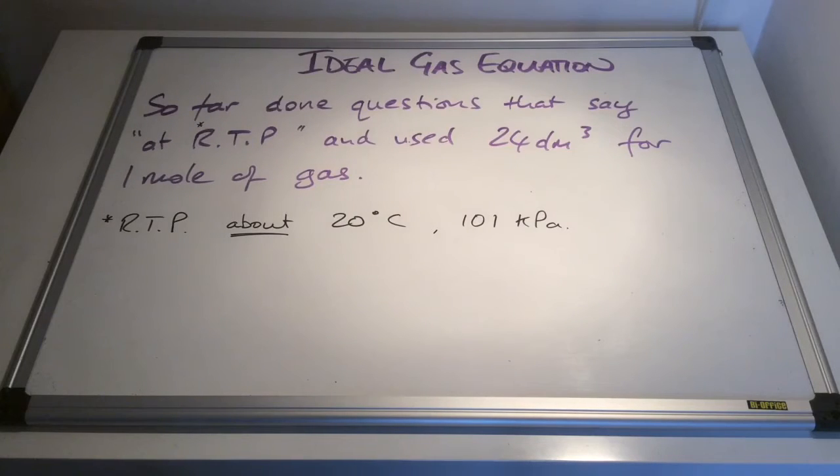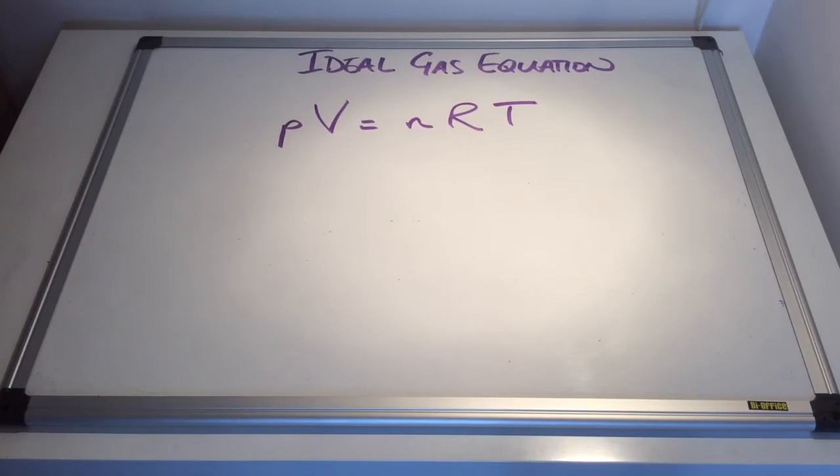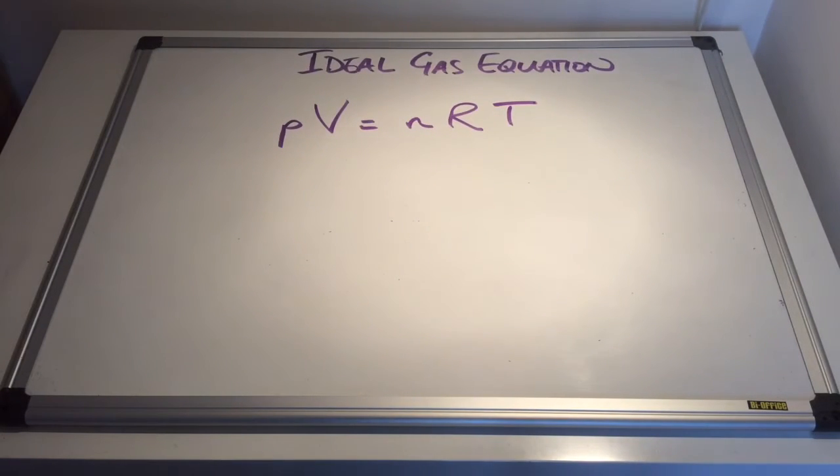So that's why we use the ideal gas equation. So there it is, nice and easy to remember: PV equals nRT. The only tricky part for this is remembering the units, so I'm going to take a little bit of time going through each term and explaining what the units are and how you convert into those units from the units that are typically given in questions.